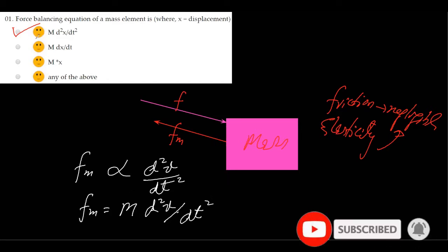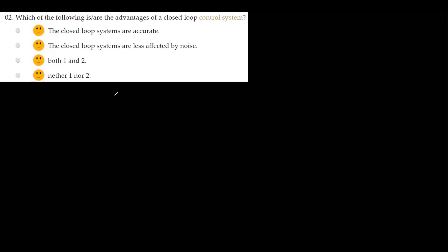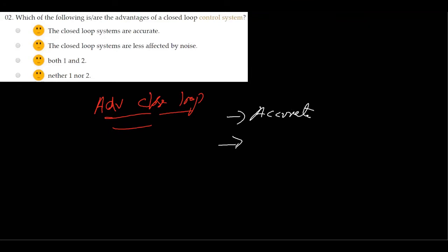The next MCQ is: which of the following are advantages of a closed loop control system — closed loop systems are accurate; closed loop systems are less affected by noise; both one and two; or neither. The closed loop system will always be accurate, and it is accurate even in the presence of non-linearities.